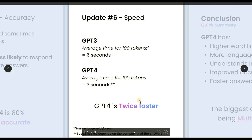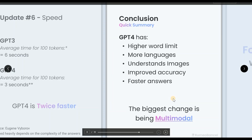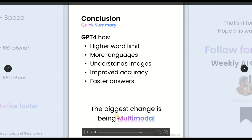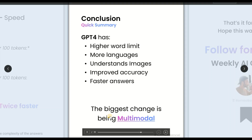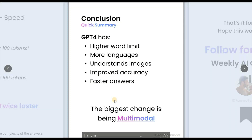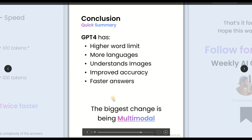So this is the overall conclusion of the features that come with ChatGPT-4: higher word limit, more language coverage, understanding image input, improved accuracy, and faster response speed. That's all about ChatGPT-4 — thank you.